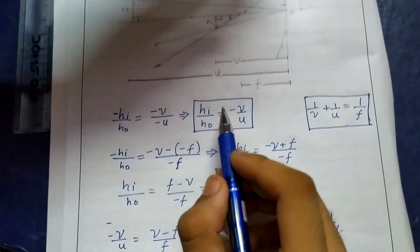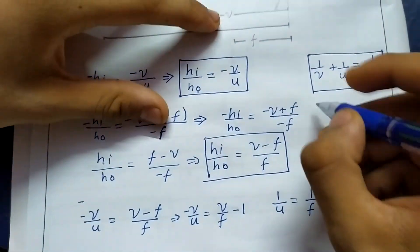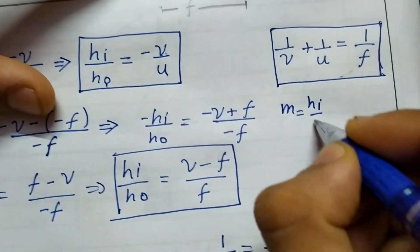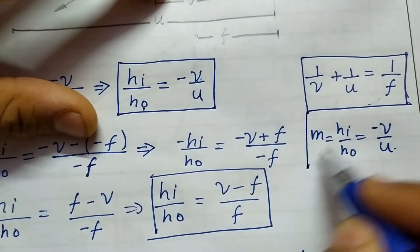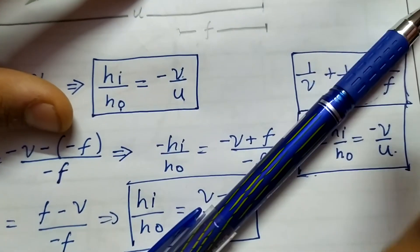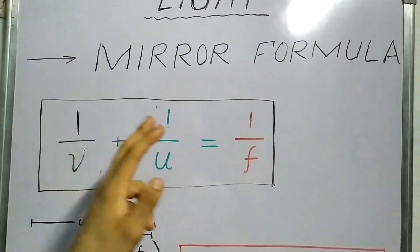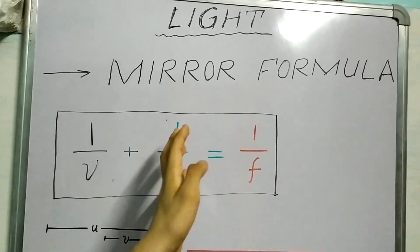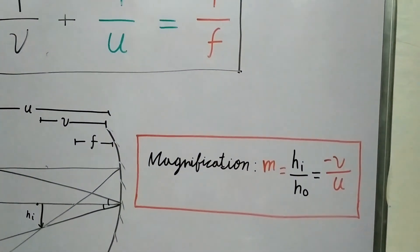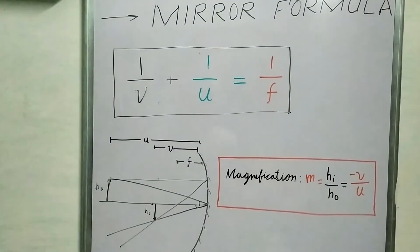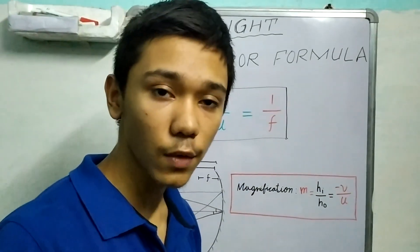The ratio of image height to object height — h-i over h-o — is itself called magnification, so m equals h-i over h-o, which equals minus v over u. As a summary: we learned the relationship between image distance, object distance, and focal length — 1 over v plus 1 over u equals 1 over f — and we learned that magnification is the ratio of image height to object height, which equals minus v over u. Thanks so much for watching!